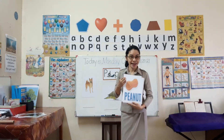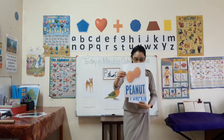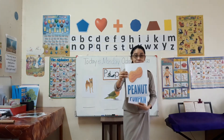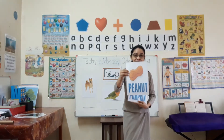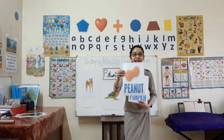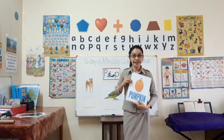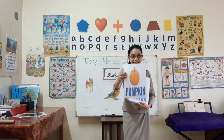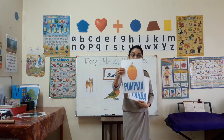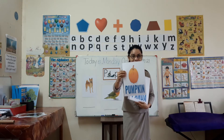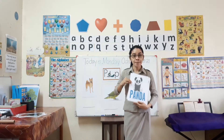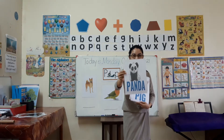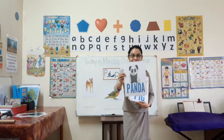Now let's have a review, children. Do you know what is this one? This is a peanut. Say it with me: peanut. Peanut can be eaten, yes. And this one is a pumpkin. Do you hear the sound? Pumpkin. You can find many pumpkins in the market.